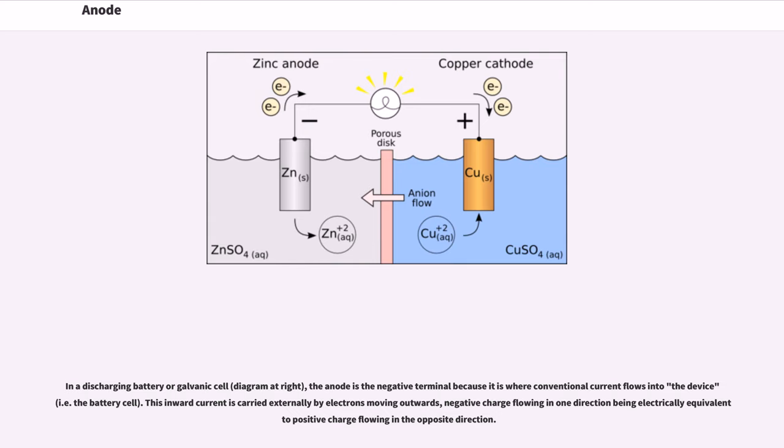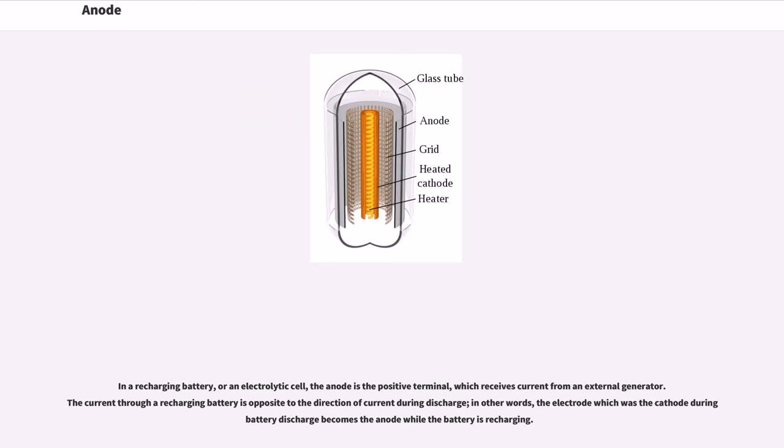This inward current is carried externally by electrons moving outwards, negative charge flowing in one direction being electrically equivalent to positive charge flowing in the opposite direction. In a recharging battery, or an electrolytic cell, the anode is the positive terminal, which receives current from an external generator. The current through a recharging battery is opposite to the direction of current during discharge; in other words, the electrode which was the cathode during battery discharge becomes the anode while the battery is recharging.